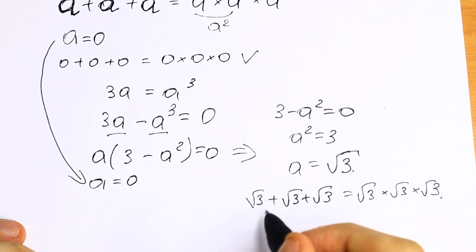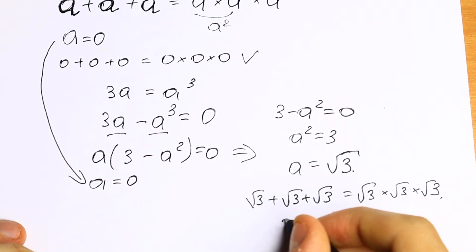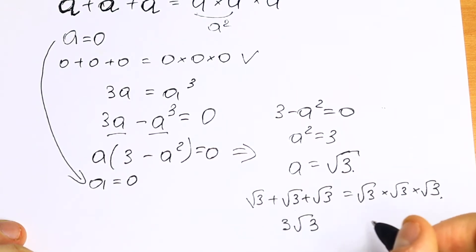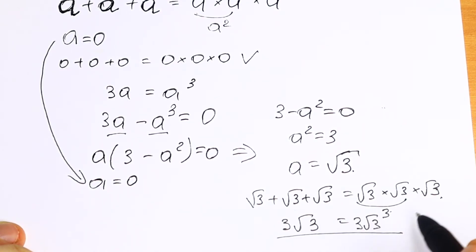So let's check this root. We will have 3 same elements, so we will have 3 square root of 3. And on the right we will have this product gives us 3, and the last step multiplying we will have 3 square root of 3. So this root is good for us.